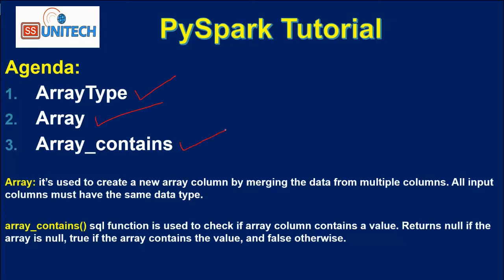What is the array type? Array type is one of the data types inside PySpark. If any column is having array type of data, then the data type of that column should be array type. Next is the array function — it is used to create a new array column by merging data from multiple columns. We can combine two different columns to generate a new array-type column. Next is array_contains — as the name suggests, if your array contains a particular string, this function will return true, otherwise it will return false.